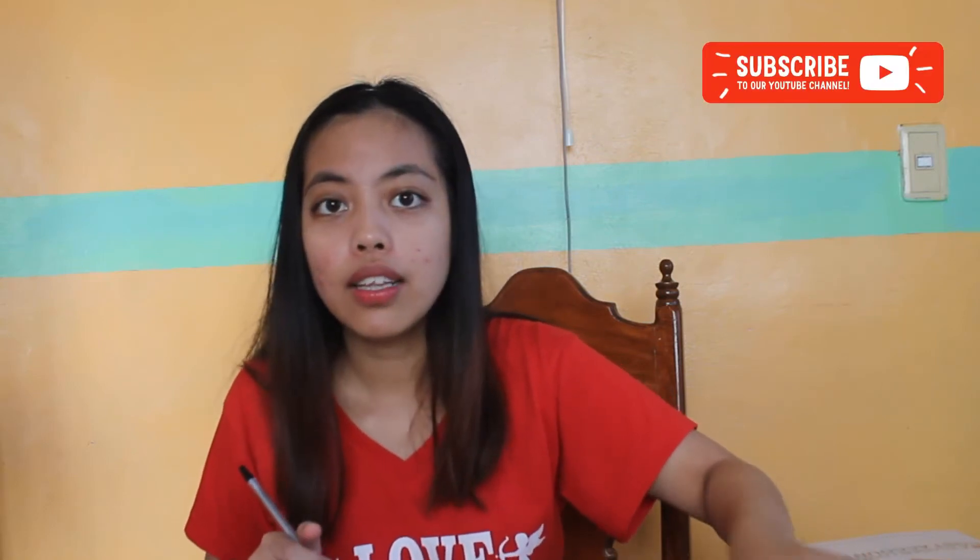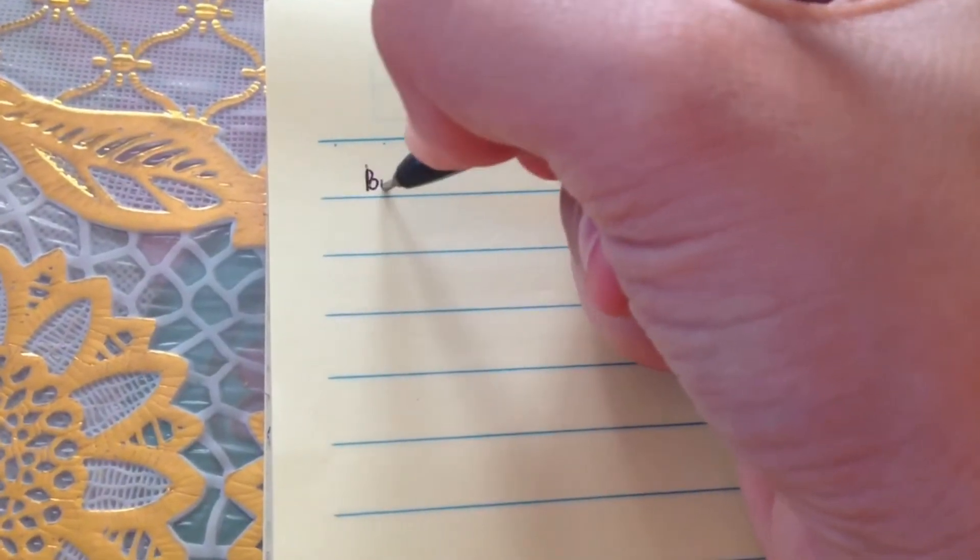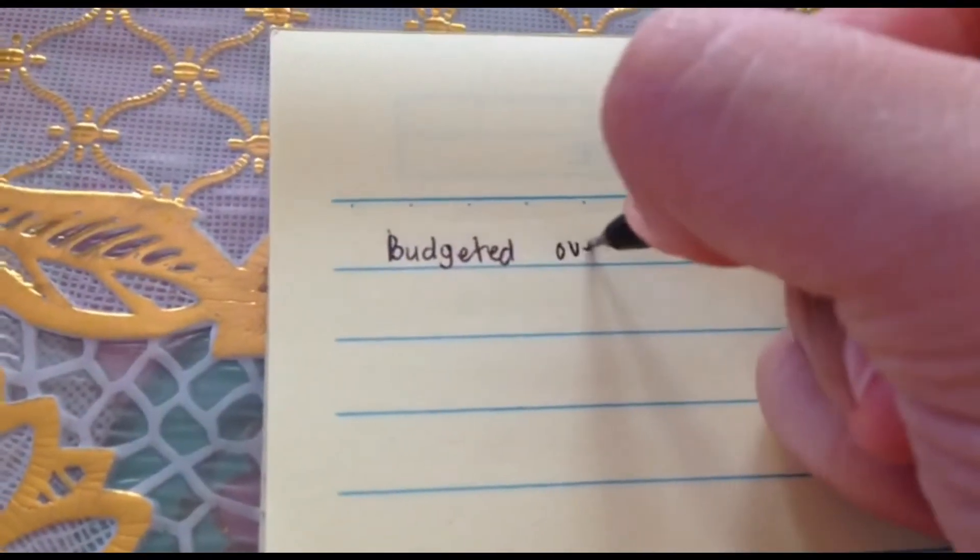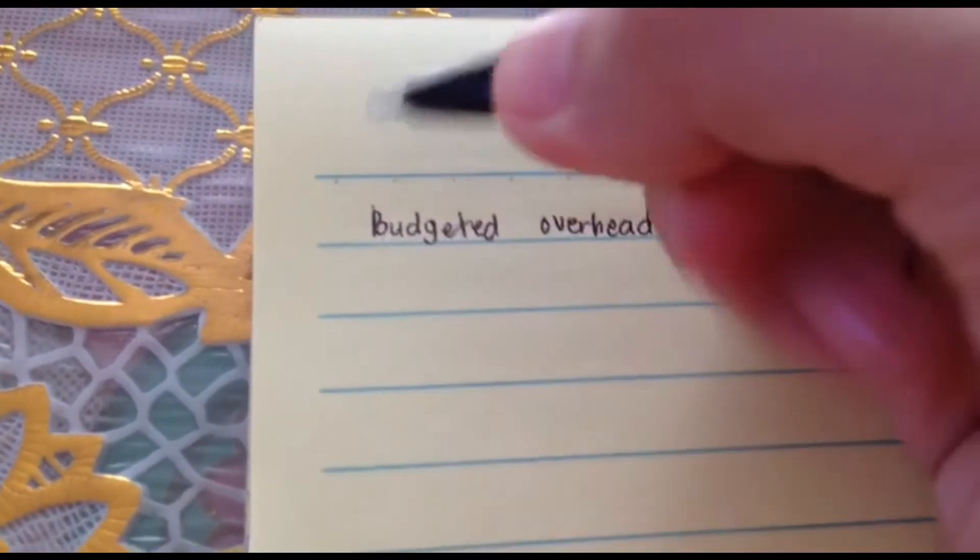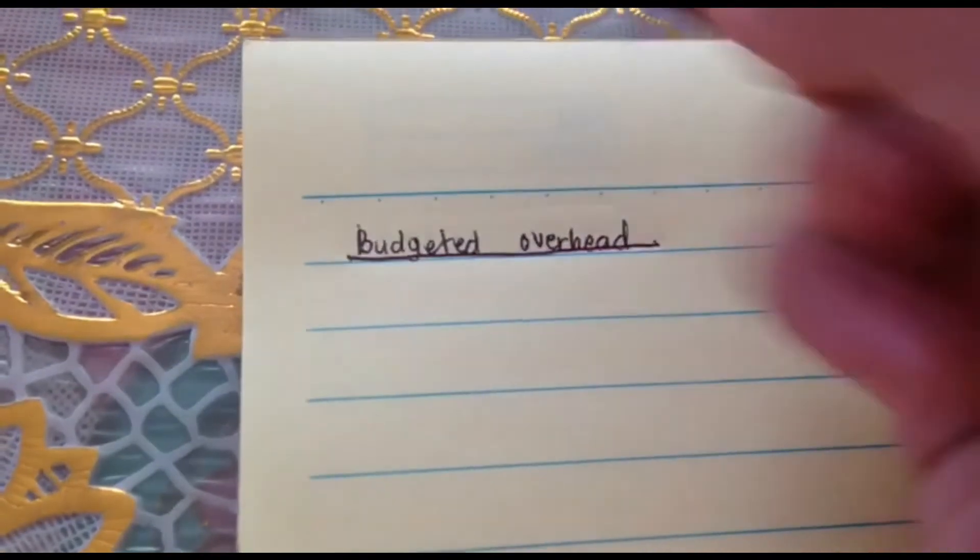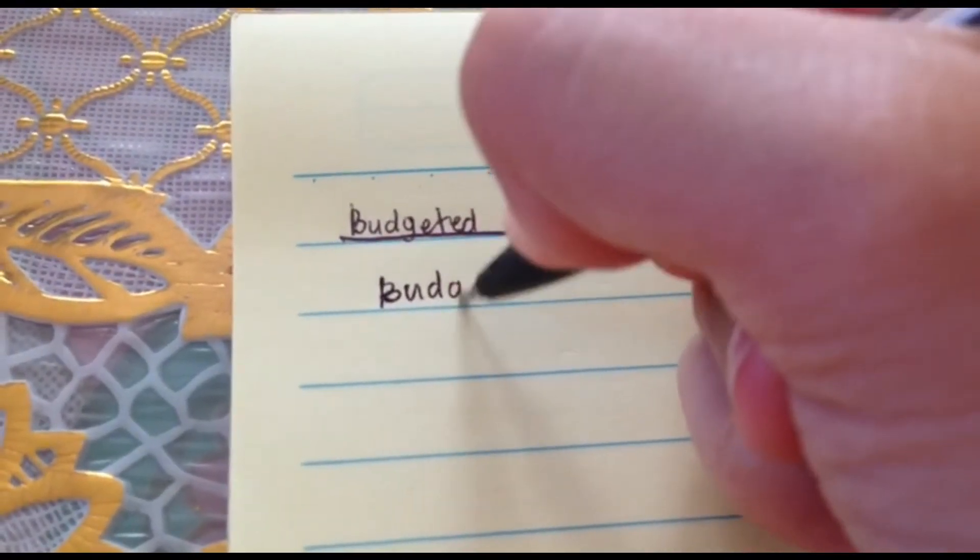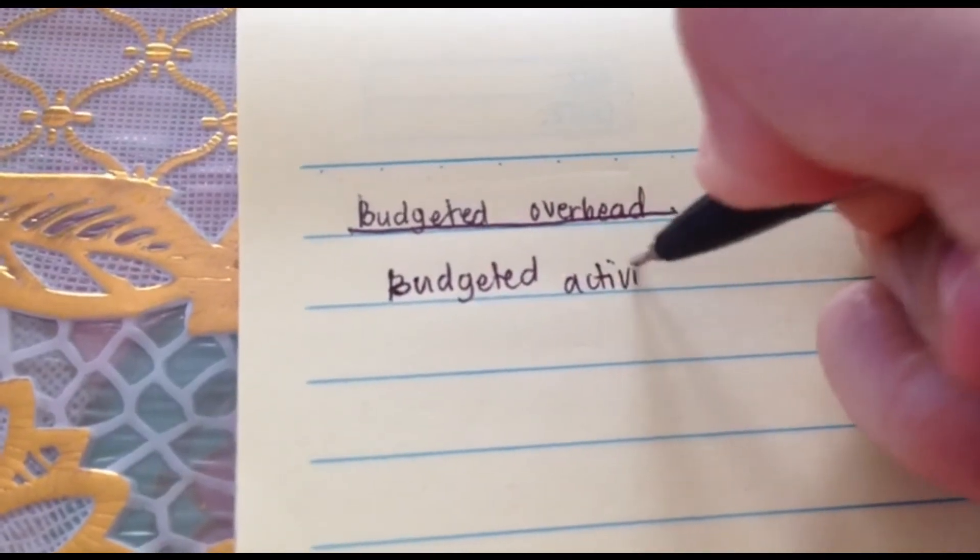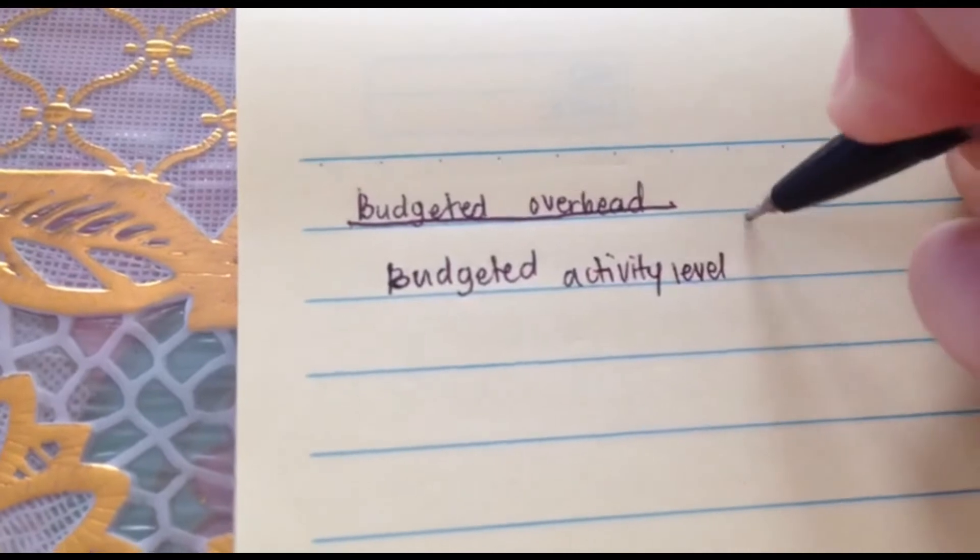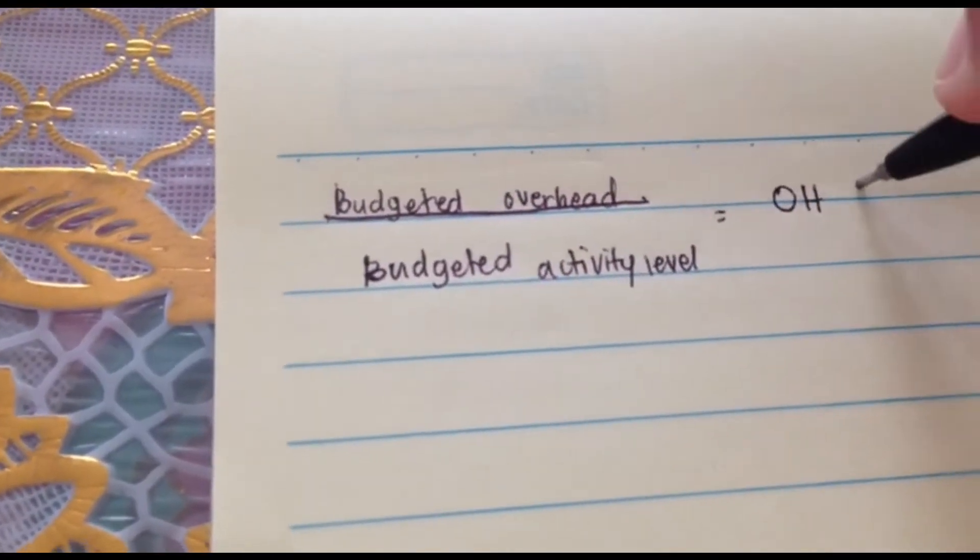How do we get the first requirement? The formula is to divide the estimated or budgeted overhead by the estimated activity level or budgeted activity level. How do we do that? Let's start with our formula. We have the budgeted overhead over our budgeted activity level is equal to our overhead rate.